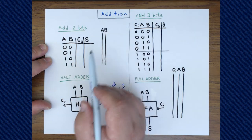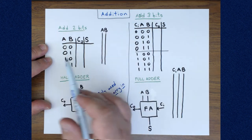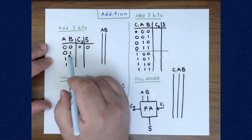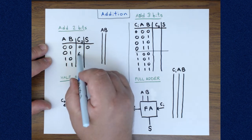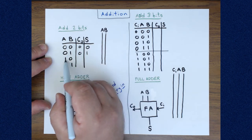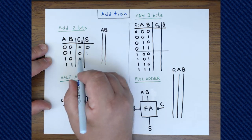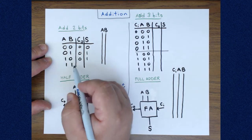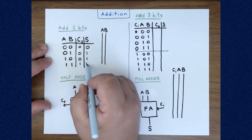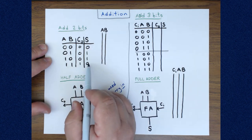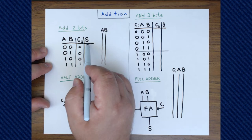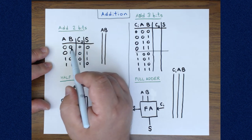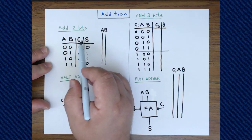We get a two-bit number because we're counting how many ones there are. We could have 0 ones, which in two bits is 0,0. We could have 1 one, which is 0,1. Adding 1 and 0 or 0 and 1 also gives a sum of 1. When we add 1 and 1 we get 2, and 2 is the number 1,0. One output is traditionally written as the sum and the other is the carry — specifically the carry out.